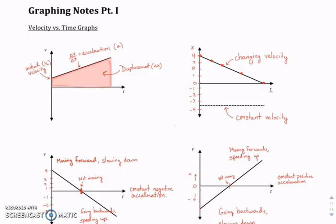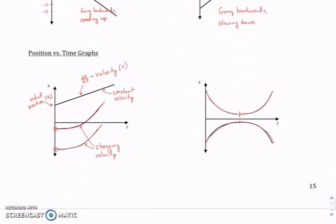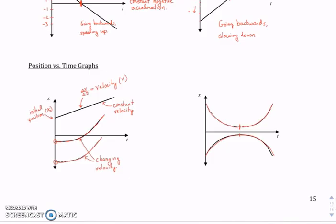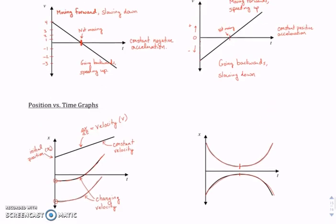We've finished graphing notes part one. You need to understand and memorize what the slope, the y-intercept, and the area bound by the curve on the velocity versus time graph are, and the slope and the y-intercept on the position versus time graphs. You need to be able to look at these graphs and describe the motion of the object. Thanks for watching.